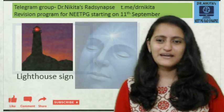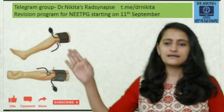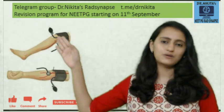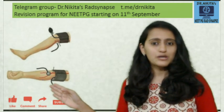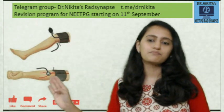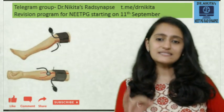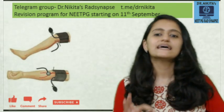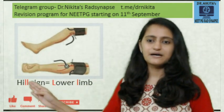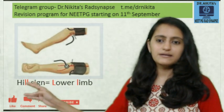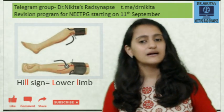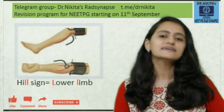Next we see blood pressure being measured in the popliteal artery and in the brachial artery — lower limb versus upper limb. The systolic blood pressure in the popliteal artery is more than the brachial artery. This sign is called Hill's sign. Very easy to remember: Hill has double-L, that is lower limb. So the double-L of Hill helps you remember that lower limb pressure is more than upper limb pressure. That is Hill's sign.